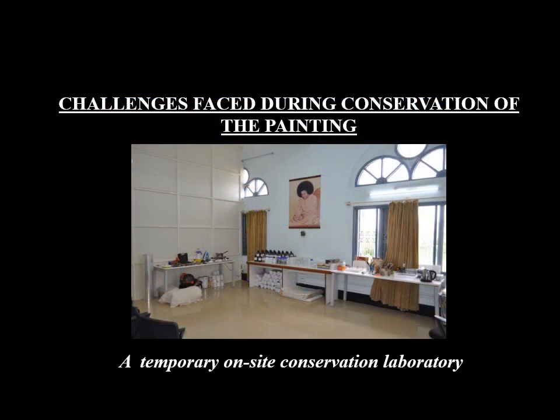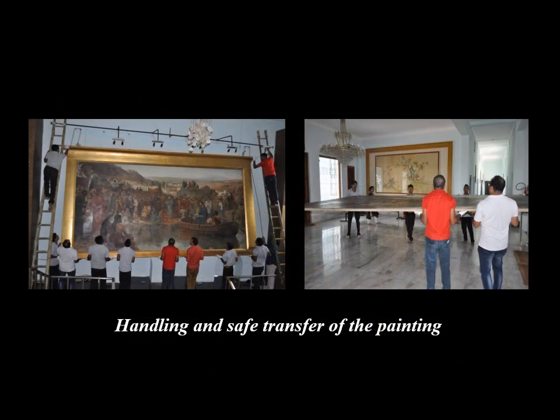Now discussing the challenges faced on-site: setting up a temporary on-site conservation lab was the primary challenge, as a controlled environment was required for the treatment of the painting as well as to store materials. Therefore, a lab was set up in a room keeping in mind all the necessary requirements. The next challenge was the handling and safe transfer of the painting from its display position on the second floor down to the ground floor. As it was daunting to shift the painting, a team of movers and packers was hired.